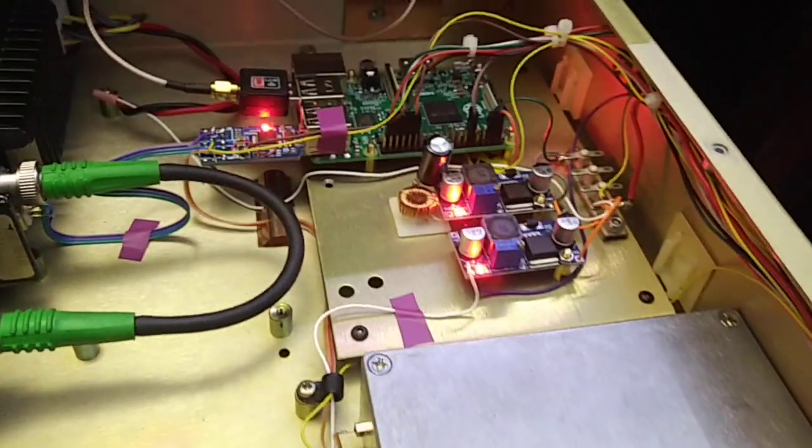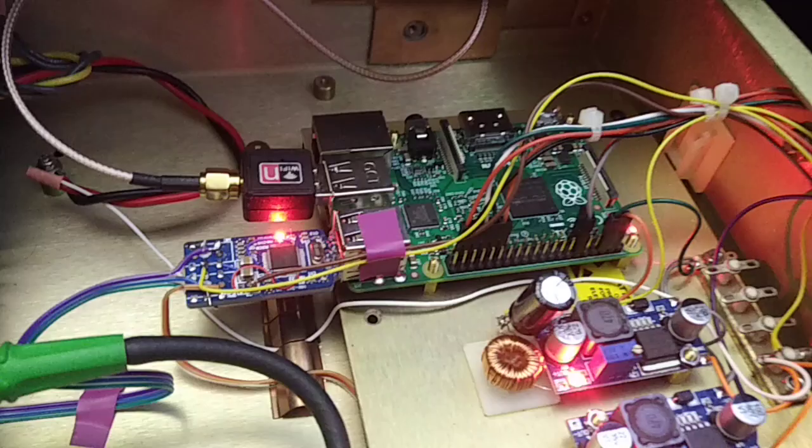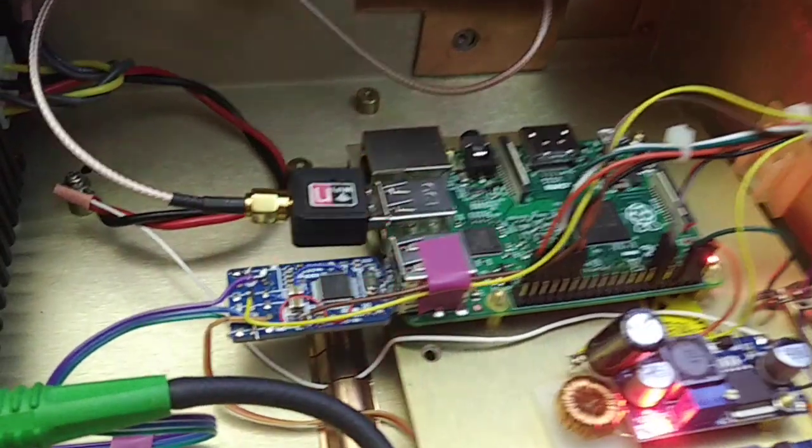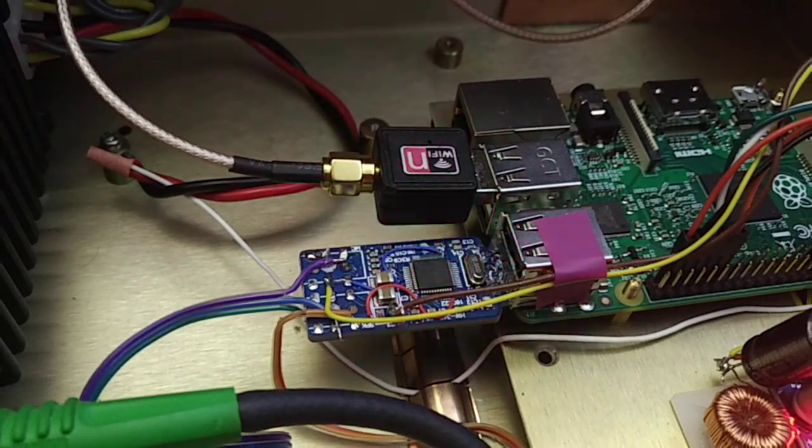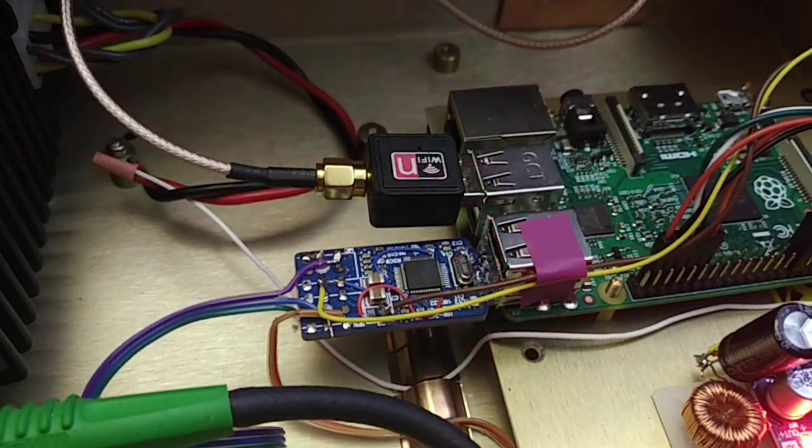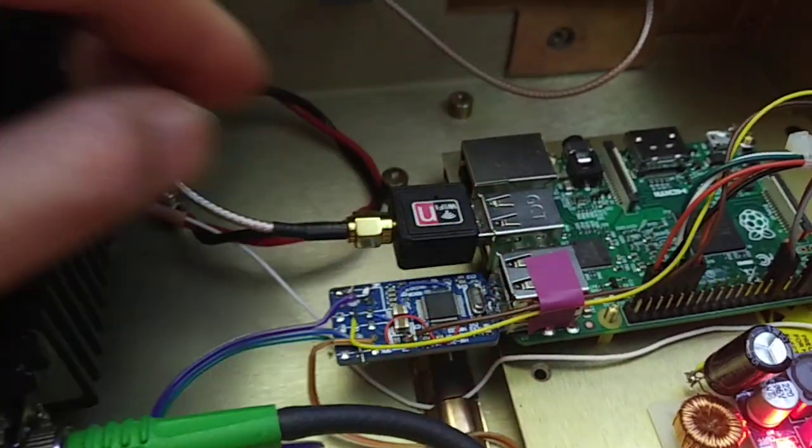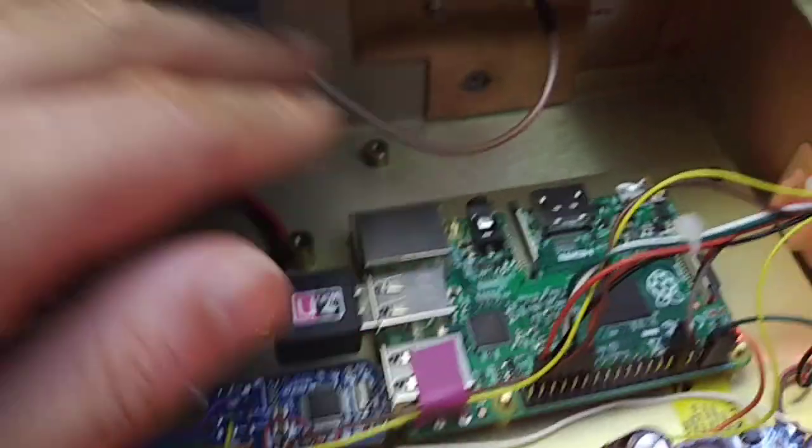So let's have a look at the heart of the repeater. It's a Raspberry Pi 2 here with the CM108 sound card. Since it's in a metal box we've got a USB Wi-Fi here that passes out to a small antenna on the back.